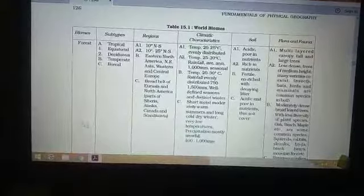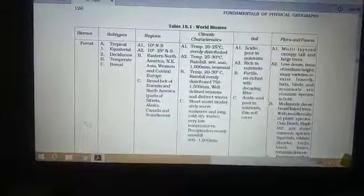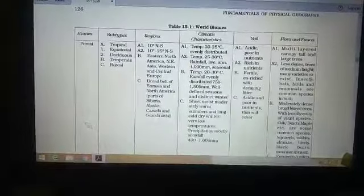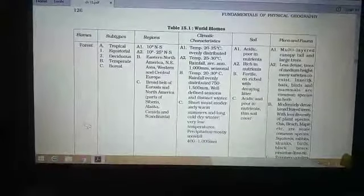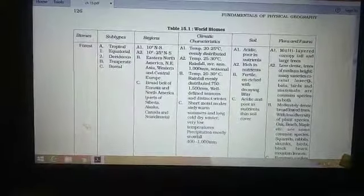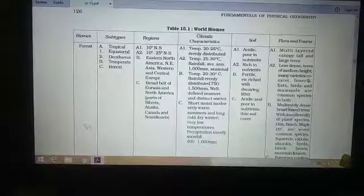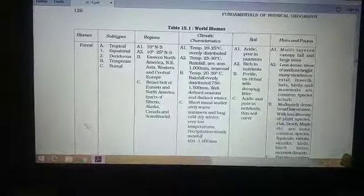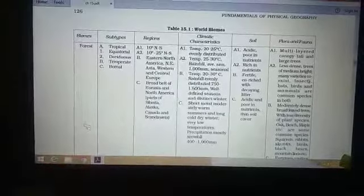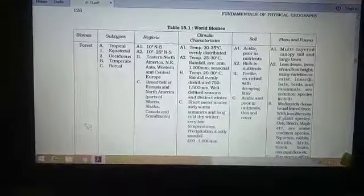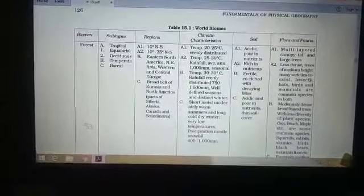Now we will discuss about the tropical savanna. Actually tropical biome means the tropical grassland. The tropical savanna biome is actually, we will discuss this tropical biome under the grassland. So in the forest first we have discussed about the equatorial.